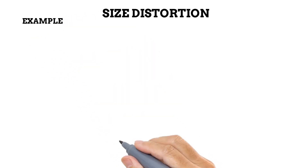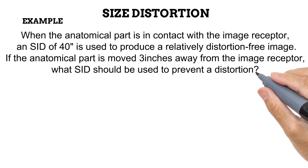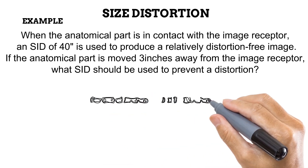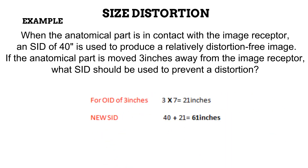To illustrate further, let us try this example. When an anatomy is in contact with the image receptor, an SID of 40 inches is used to produce a relatively distortion-free image. If the anatomy is moved three inches away from the image receptor, what SID should be used to prevent distortion? We have stated that for every one inch of OID added, seven inches of SID increase is needed. In this case, three inches of OID was added, which means 21 inches of SID increase is needed. The original SID was 40 inches, thus 21 inches should be added to the old SID of 40 inches for compensation to occur. This brings our new SID that would provide a distortion-free image to 61 inches.